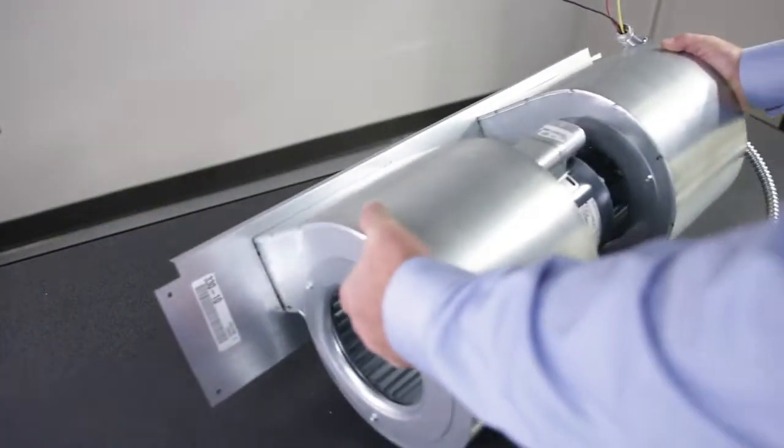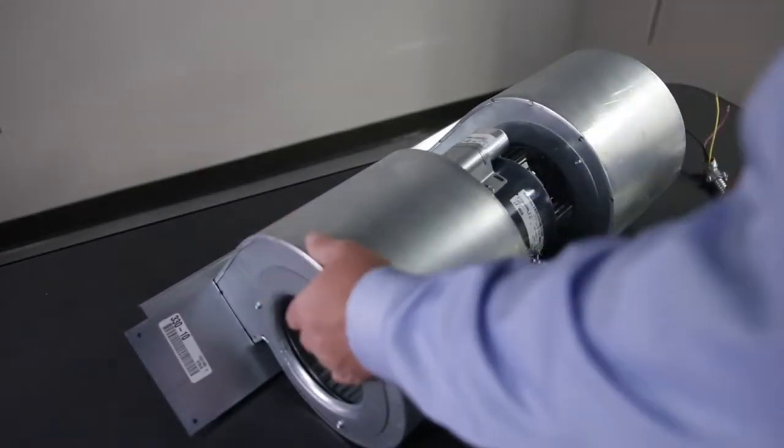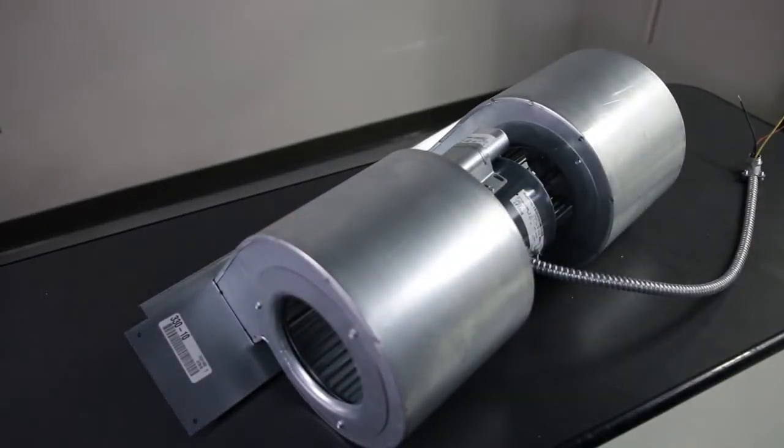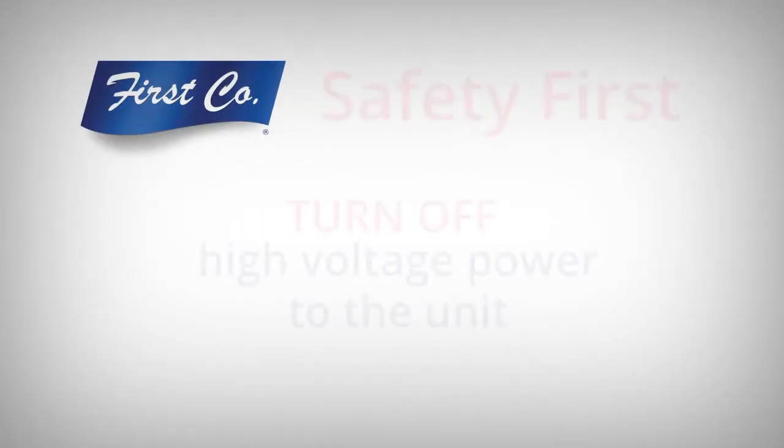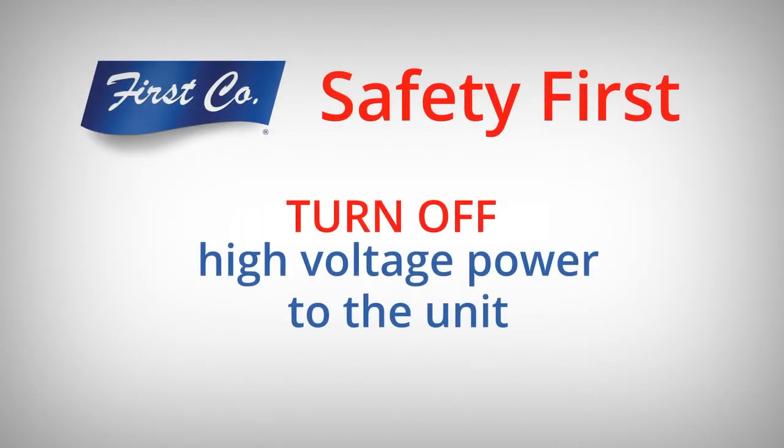We'll begin with the assumption that the blower assembly has been removed from the unit and is on a workbench or location where it's easier to work on. As always, be sure and verify that the electrical power is off before attempting any work on the HX or HXX unit.